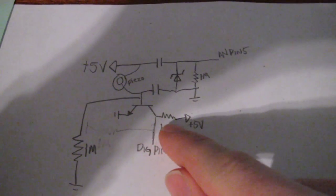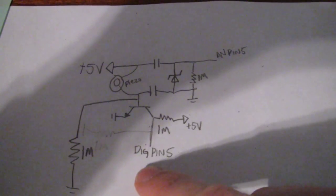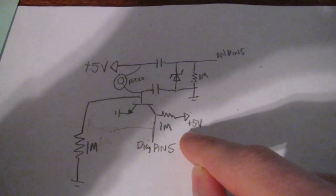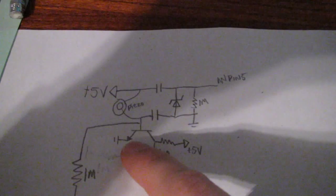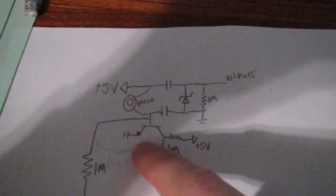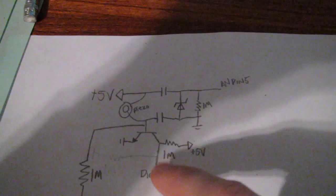So when this transistor is on, this pin is no longer seeing this 5 volts from the pull-up resistor because this is negligible. It's going to be a voltage divider, and this is going to be very close to ground.